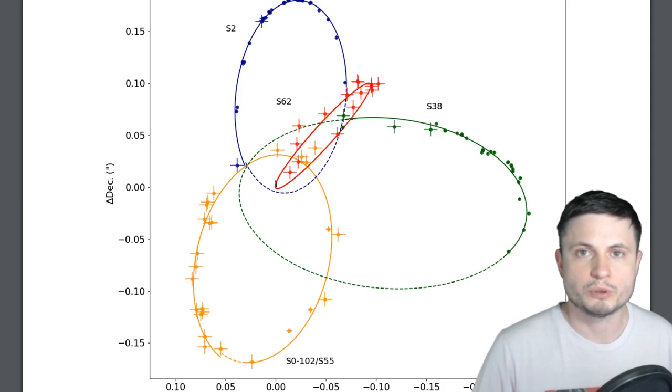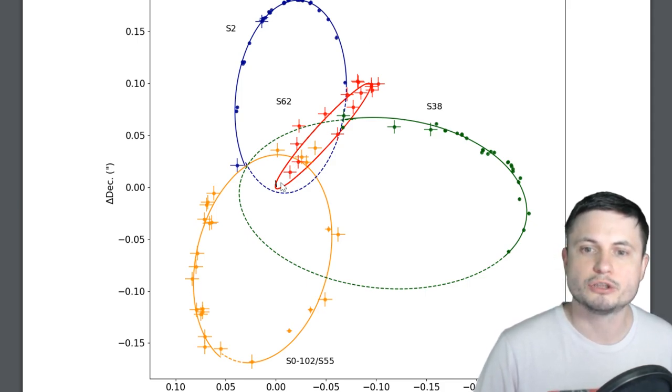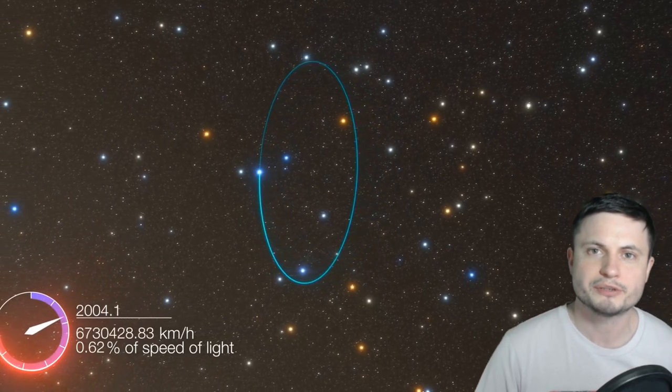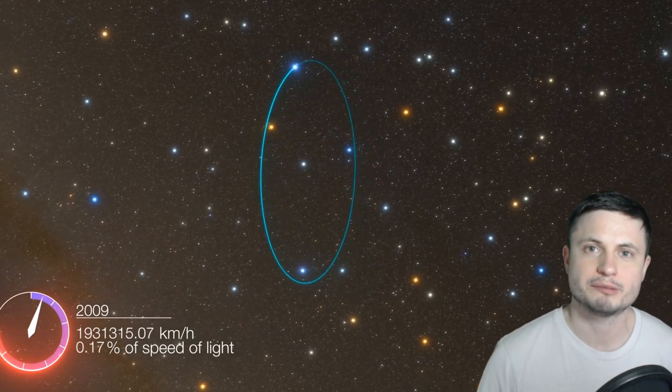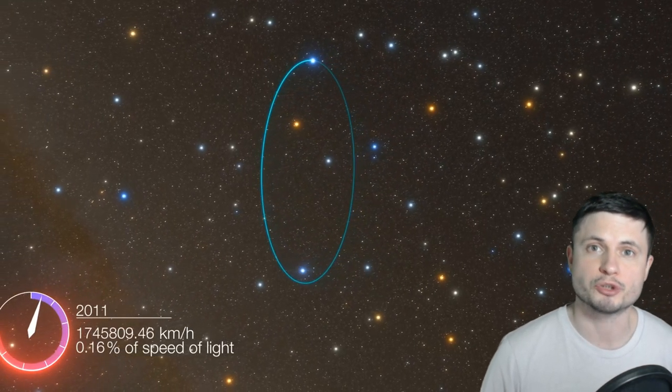But why is this called the fastest star? Well it's because once again at the closest approach to the black hole, which is what we refer to as periapsis usually, the star itself moves at around 10% of the speed of light. That's about 30,000 km per second.